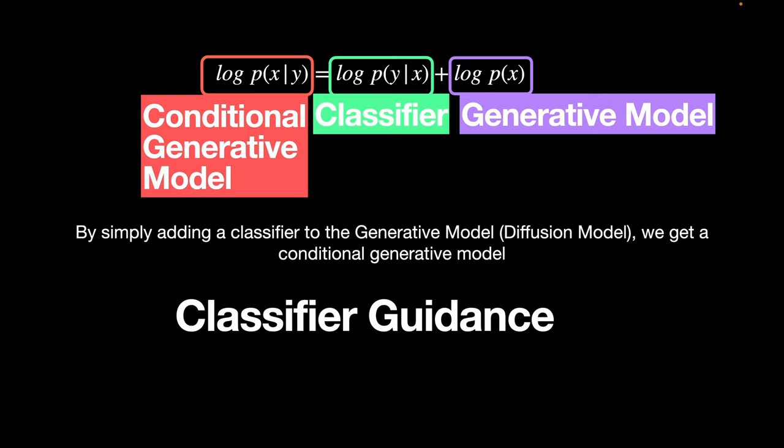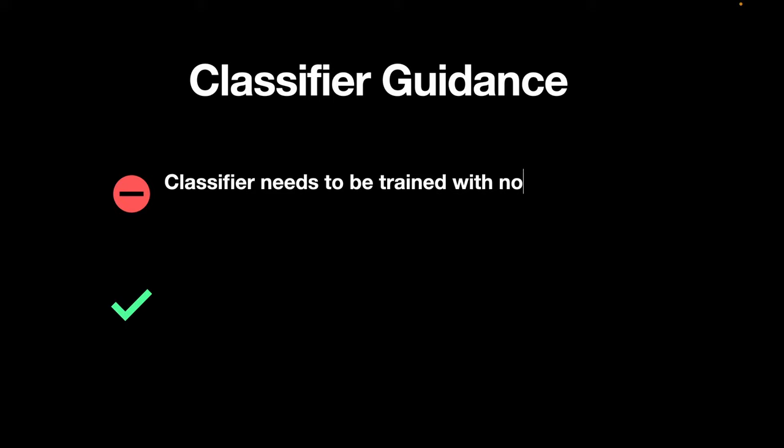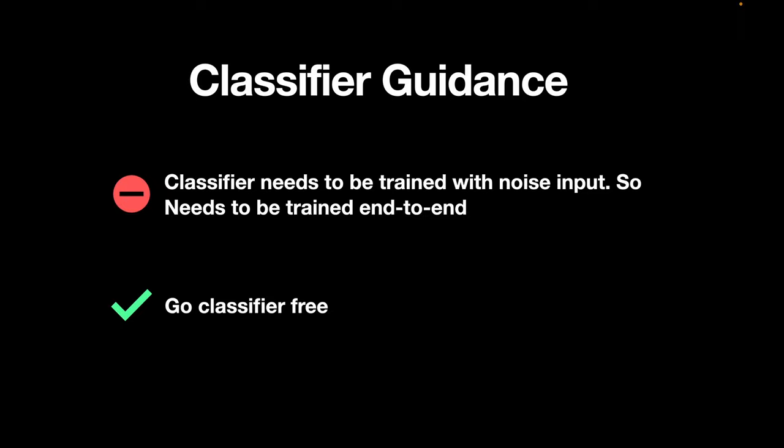But one of the drawbacks of this classifier is that it needs to be trained with noisy input. Why? Because the input to the diffusion model is noise. And so, the classifier needs to take the noise and classify what class that noise belongs to. The solution to this problem, however, is to get rid of the classifier altogether and arrive at classifier-free guidance.